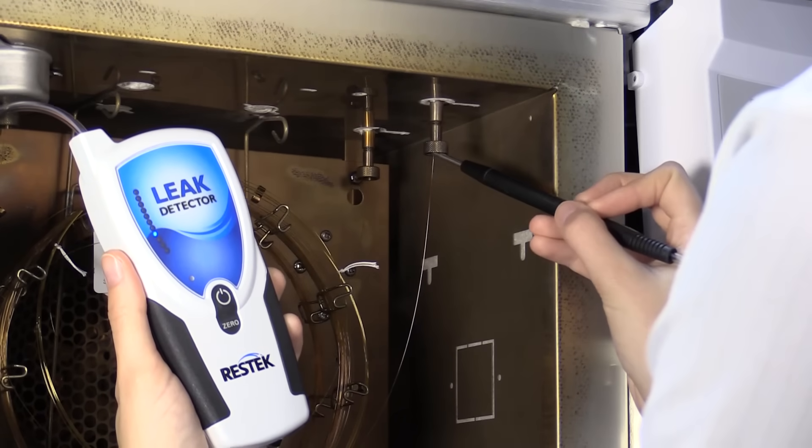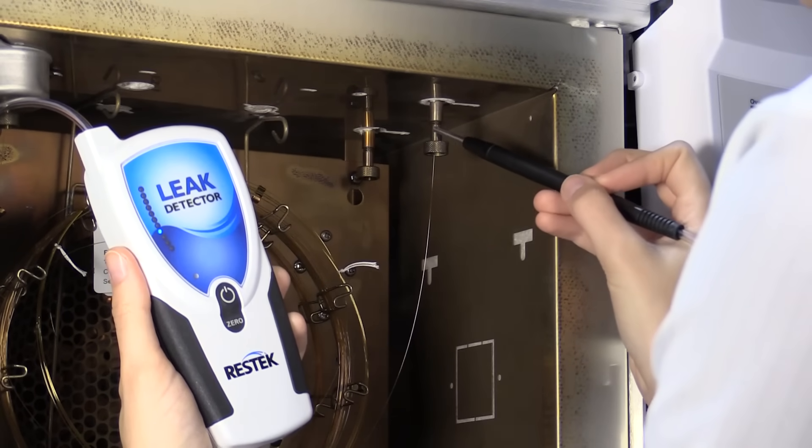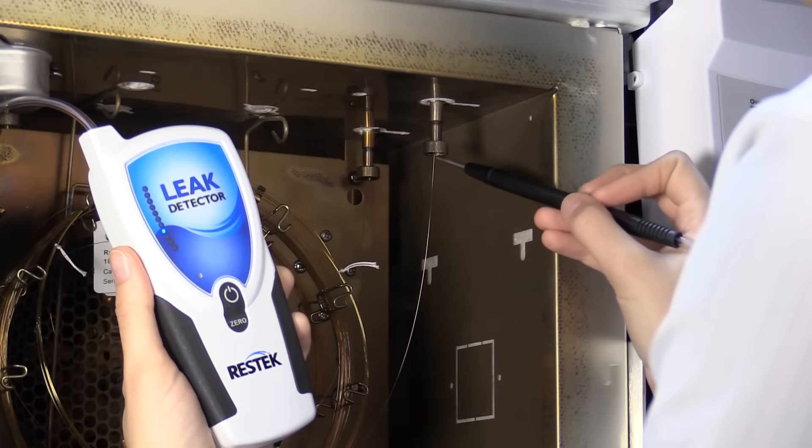Detector nuts from atmospheric pressure detectors such as FIDs and TCDs can also leak if improperly tightened or if a column breaks during installation.